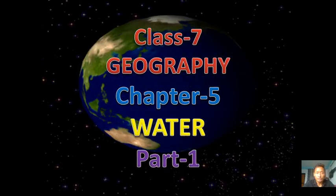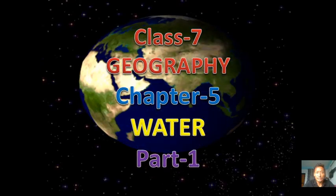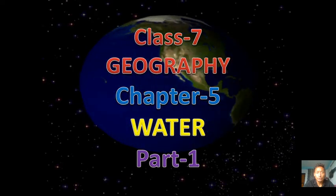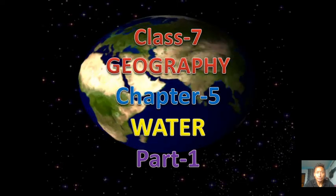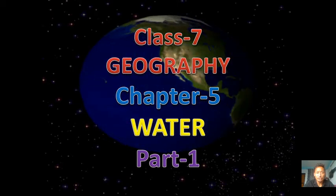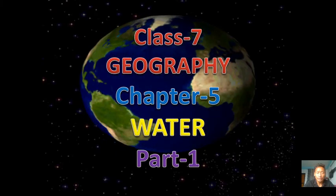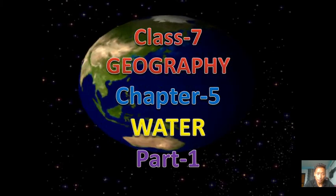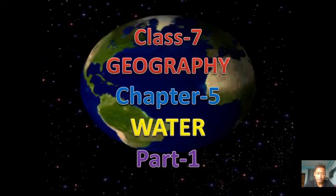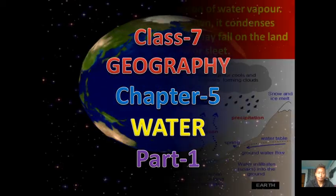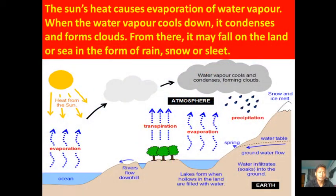Today in this class we are going to discuss Class 7 Geography Chapter 5. The name of the chapter is 'Water' - Part 1. The Sun's heat causes evaporation of water vapor.